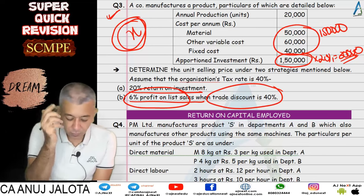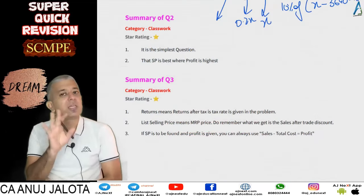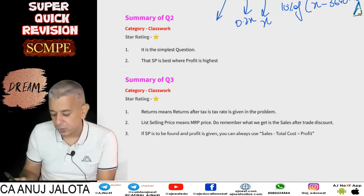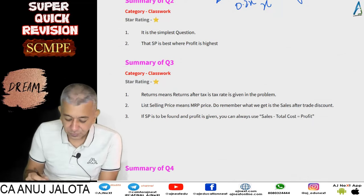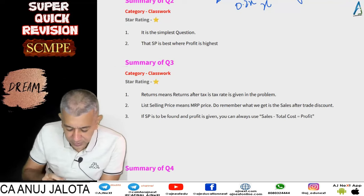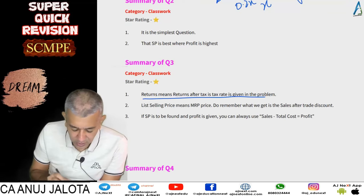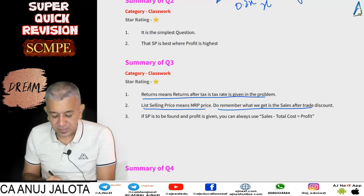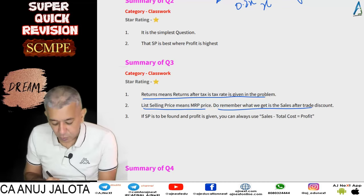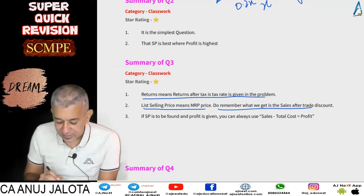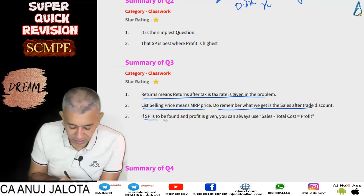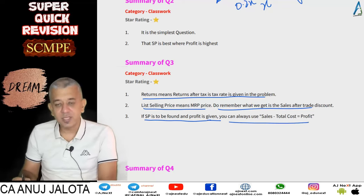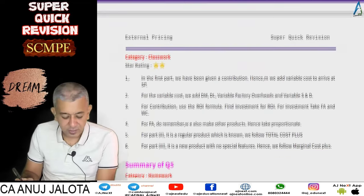Question number three was again quite easy and manageable. Returns means returns after tax. List selling price means the MRP price, but remember what you actually receive is after trade discount. If selling price is to be found and profit is given, you always use the equation: sales minus cost equals profit.